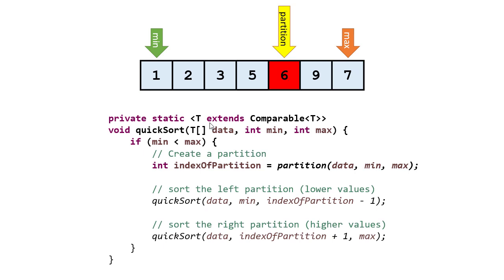I'm not going to walk through the rest, but it would be a good exercise to complete the walkthrough yourself. The key thing to remember is that when sorting the left partition, min is at the start and max is at the partition minus one. When sorting the right partition, min is at partition plus one and max is at the end.